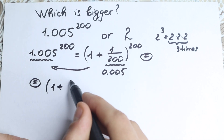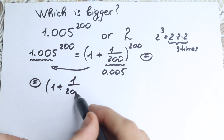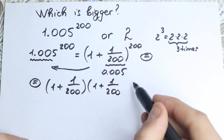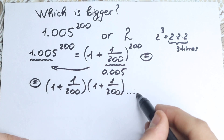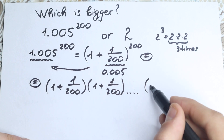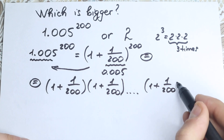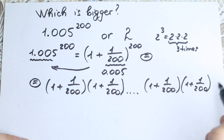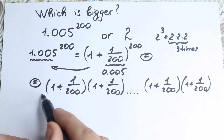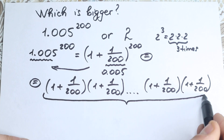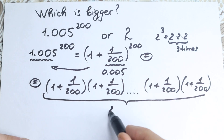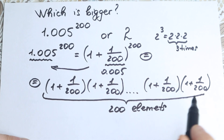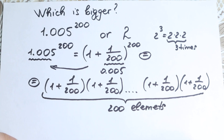So we have (1 + 1/200) times (1 + 1/200) times dot dot dot times (1 + 1/200) — the last element — times (1 + 1/200). We have 200 elements total. I hope you understand this step; this is basic math, nothing hard.